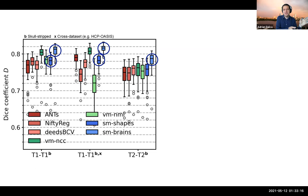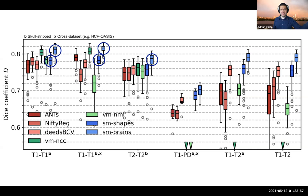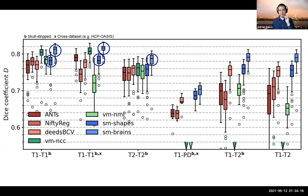What happens when we look at modalities we haven't seen and try to register between modalities? Classical methods don't do as well — the statistical metrics used for cross-modal registration tend to be nowhere near as accurate. VoxelMorph models, especially the one trained with NCC, completely collapse because they've never seen these modalities before. But the SynthMorph models are remarkably robust — I have to admit I was surprised.